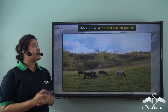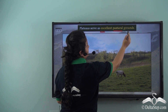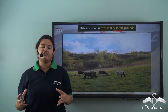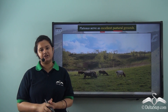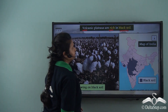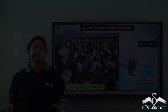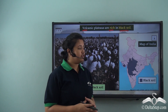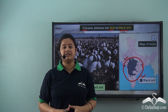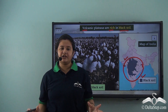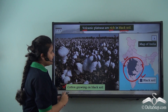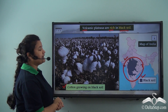Apart from providing minerals, plateaus also serve as excellent pastoral grounds. The cool climate of plateaus supports cattle rearing, as cows can graze on lush green plateaus. Plateaus of volcanic origin are also rich in black soil, which is very fertile because it is rich in minerals. Black soil is found in volcanic plateaus like the Deccan Plateau, and since it is very fertile, it is very good for growing crops like cotton. Thus plateaus, especially volcanic plateaus, provide us with fertile soil.